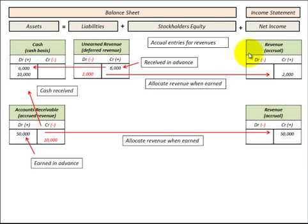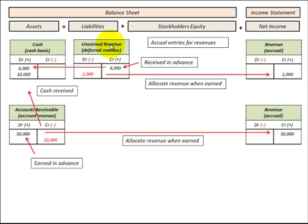Let's look at how we'd use accrual accounting to recognize revenue on our income statement. We can do it through a liabilities account or through an asset account on our balance sheet. Looking at the liabilities account first, that would be our unearned revenue or deferred revenue account.